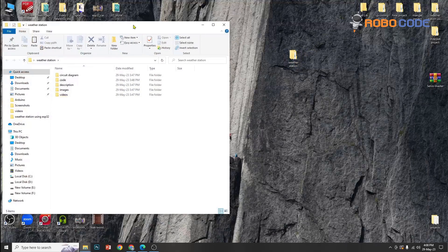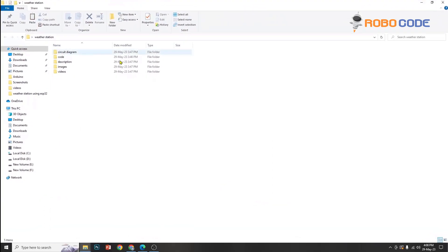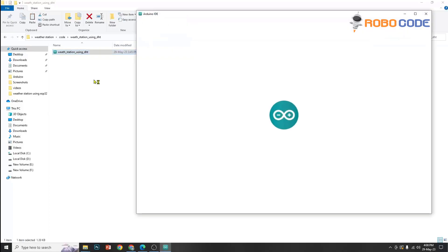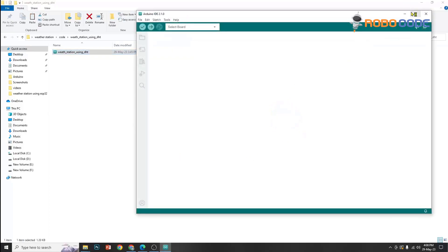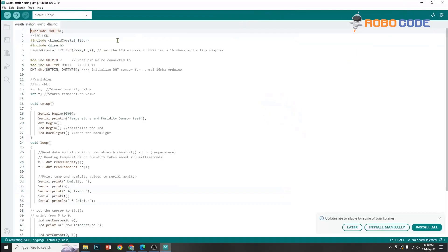In the description, we have given you the code link. You can download the code and locate it by going inside, and you can see a folder called weather station using DHT. You can go inside, double click, and if you have installed Arduino IDE then you can see the code.